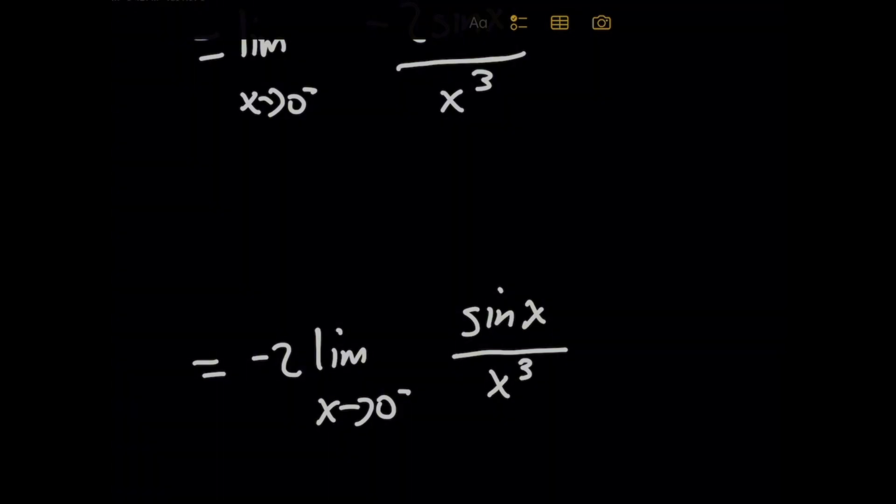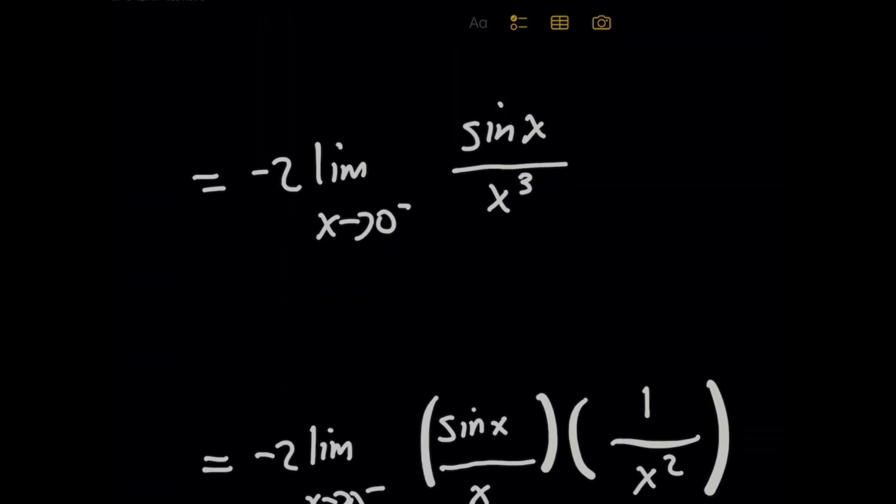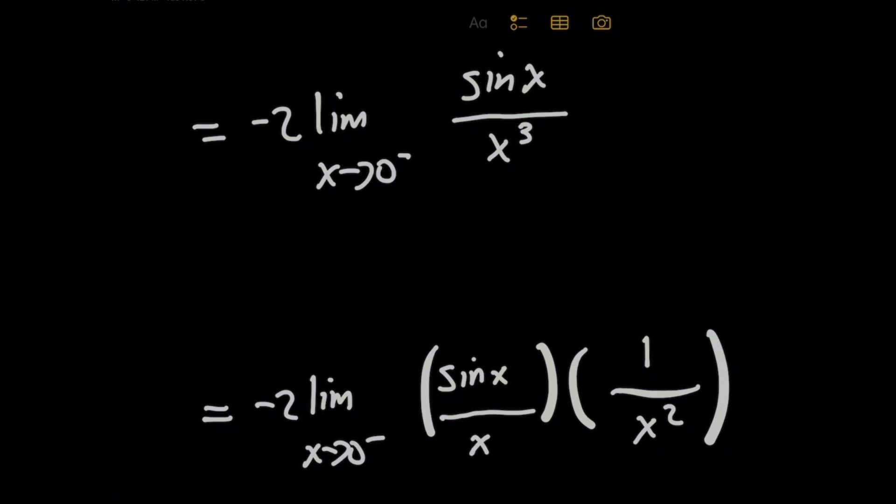Aha, but guess what? Sometimes when you have a fraction like this, you might want to play around and rewrite it as a product of parts. So why don't I go ahead and do that? I'm going to rewrite sine of x over x cubed in such a way where I have sine of x over x times 1 over x squared. Totally fine, right? Now why am I doing this?